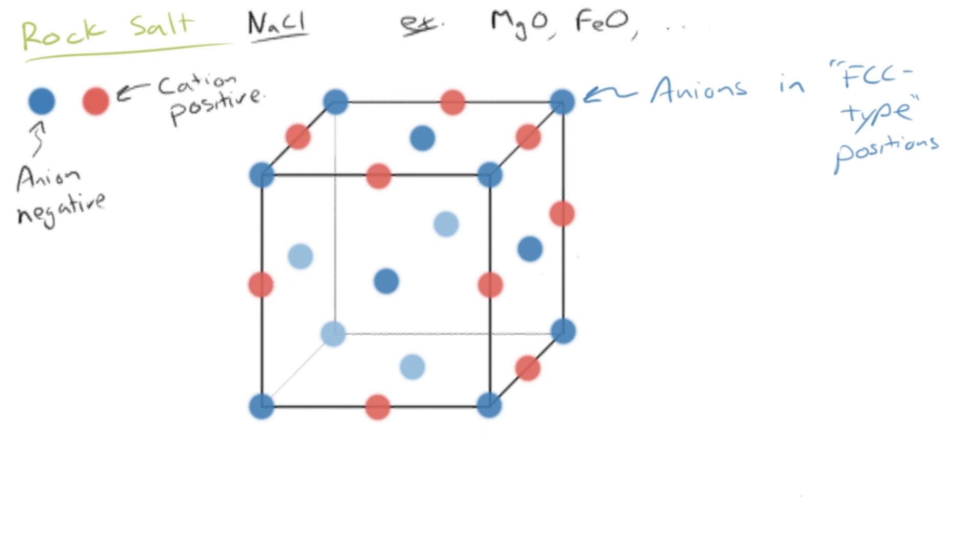So there we go. We've got those ones, and then I'll just sketch in the hidden ones here, the back edges. Okay. And label those. These are the cations.